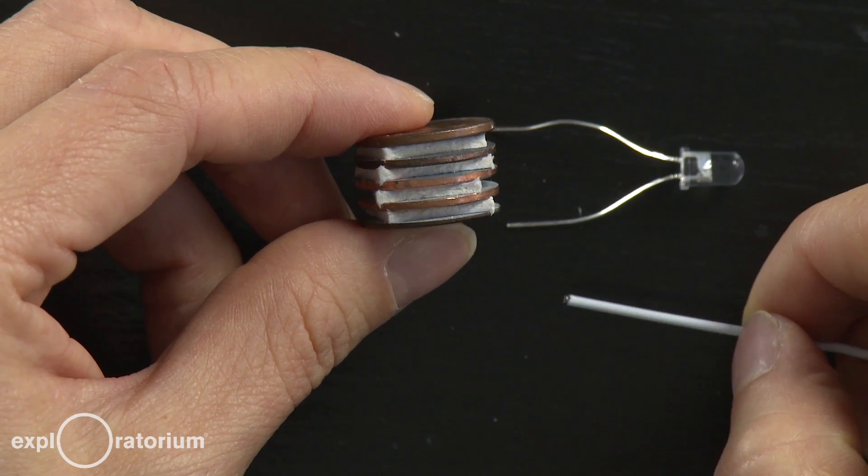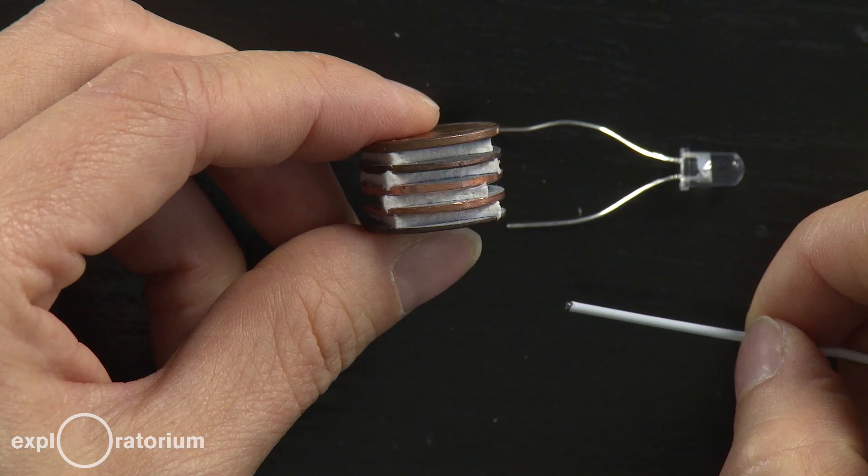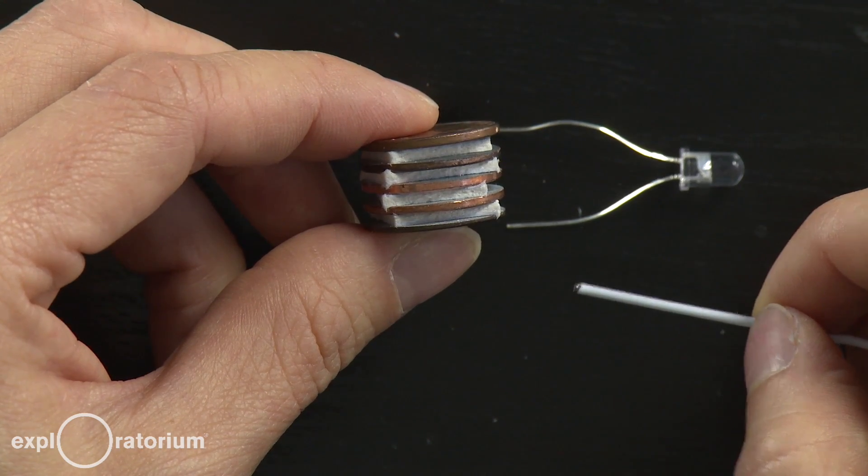So how does this battery work? A battery is just a device that converts chemical energy into electrical energy.